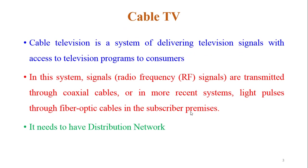Cable TV. As we all know, before DTH we had cable TV at our homes, where the signal came through coaxial cables. Basically, cable television is a system of delivering television signals and providing access to television programs to consumers. The RF signals are transmitted through coaxial cables and, as of now, also through fiber optic cables to the subscriber devices. It needs to have a distribution network.